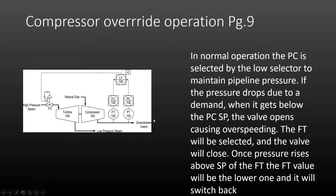If the pressure drops due to increased demand downstream, the valve opens up with the high pressure steam, and the turbine is going to be over-speeding — spinning faster than it can produce the gas. Once that happens, the pressure signal has exceeded the low limit selecting value set for the flow transmitter, and it will be selected. The valve will close until the pressure rises above the pressure transmitter set point, at which point control switches from the flow transmitter back.